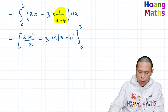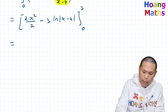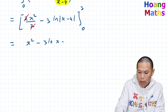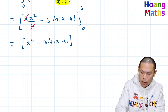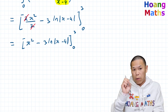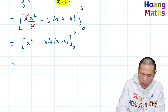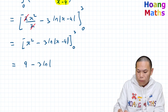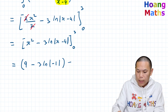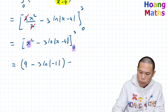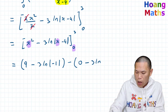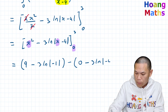Evaluating from 0 to 3: when x equals 3, 3 squared is 9, and 3 minus 4 is negative 1. So we get 9 minus 3 ln|negative 1|. Then minus: when x equals 0, 0 squared is 0, and 0 minus 4 is negative 4. So we get 0 minus 3 ln|negative 4|.